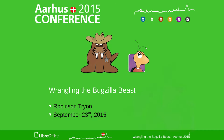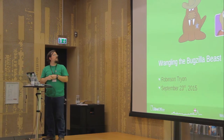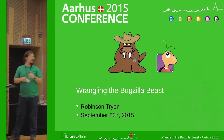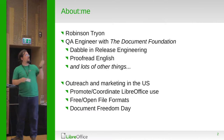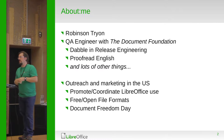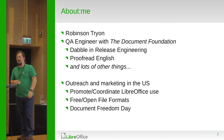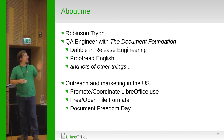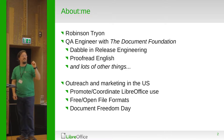We're at time, so I'll get started and jump in. My name is Robinson Trion. I'm a QA engineer with the Document Foundation, and I dabble in other things — proofreading stuff in English, release engineering, and a bunch of other stuff.